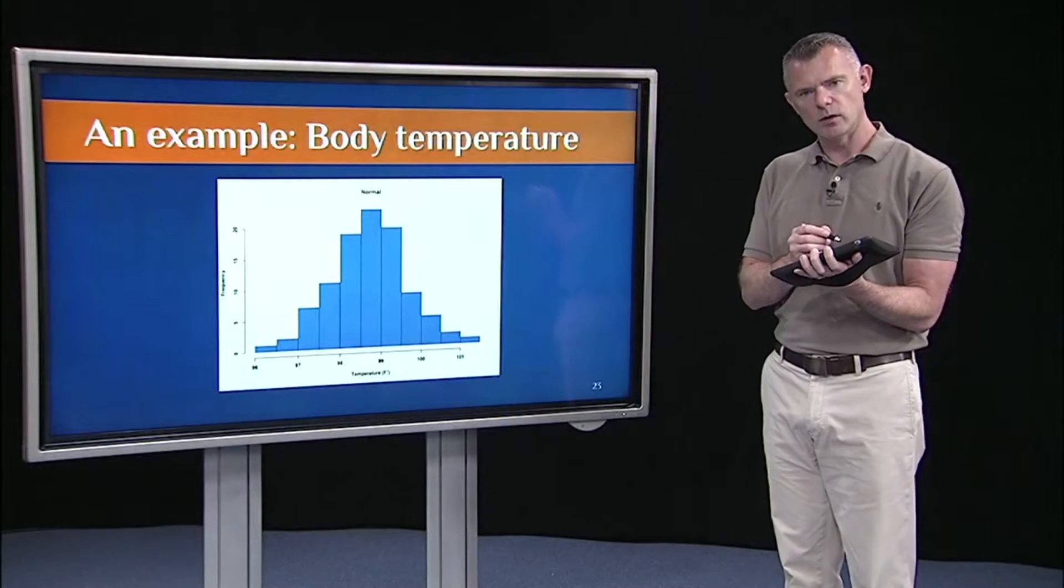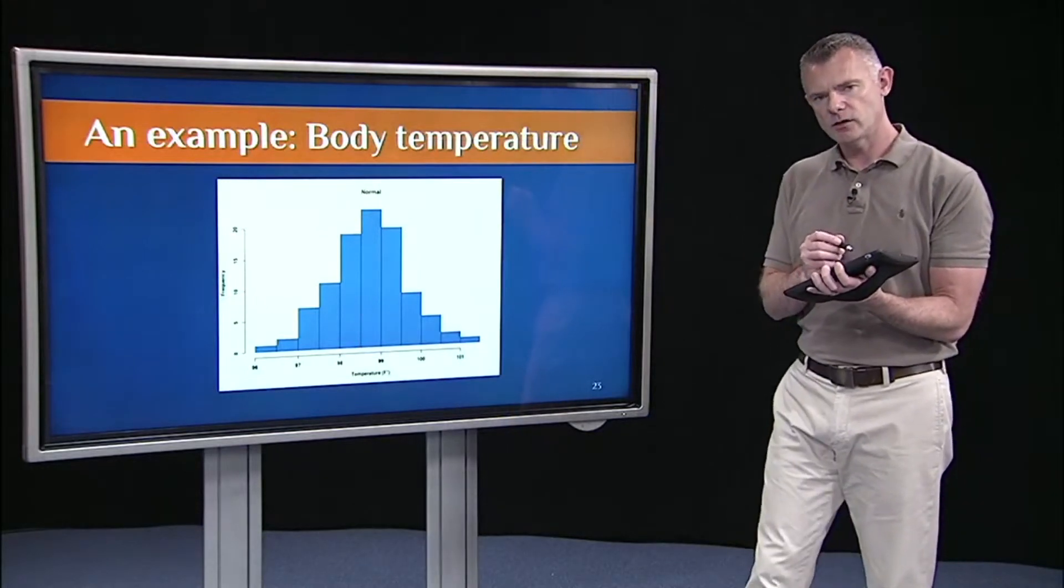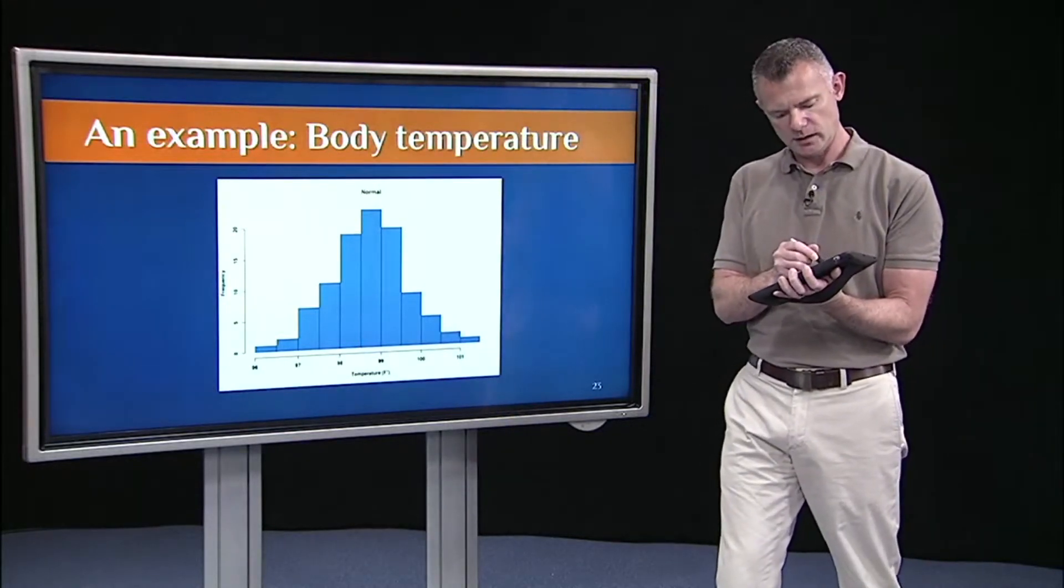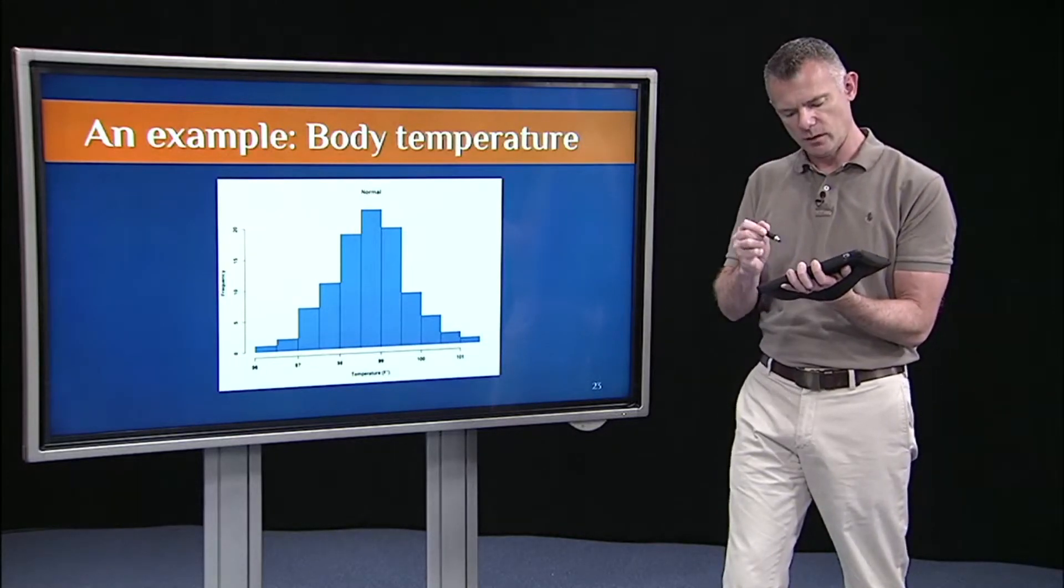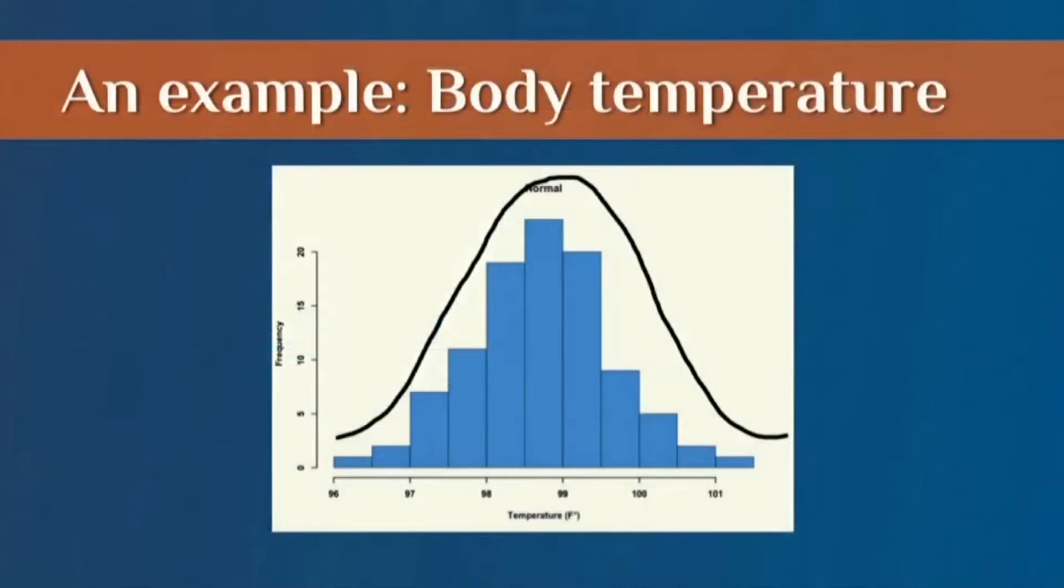So that's a nice normal distribution. A characteristic of a normal distribution is, if I wanted to smooth this, I could draw a curve over it. It has this nice bell-shaped curve to it. And the way to spot a normal distribution is to look for that signature bell-shaped curve.